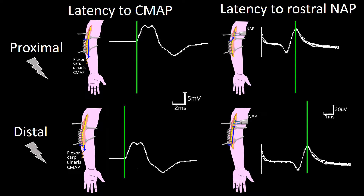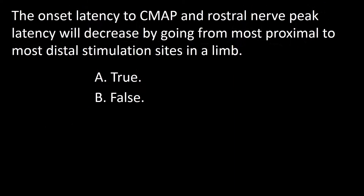The sensory fibers coming from the muscle travel 10 to 15% faster than the fastest motor fibers. So the answer to this question is false.